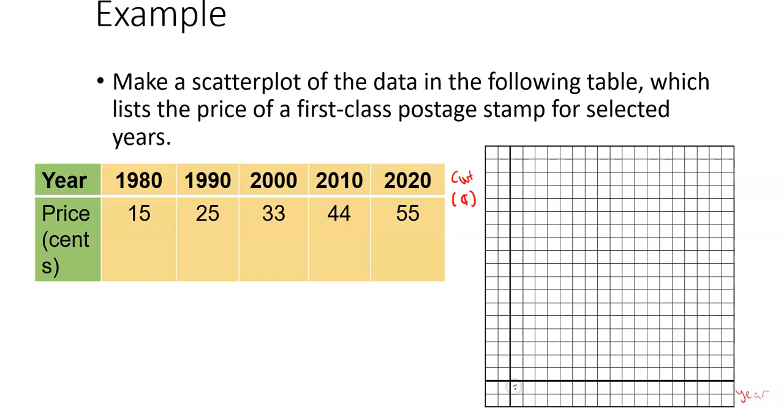I'm going to put my year on this axis and the cost on this axis, and the cost will be in cents. We're not going to jam all five years right in the corner. We'll put a little note that we're making a break, and then maybe this is 1980, this will be 1990, this will be 2000, all the way through 2020. As for the cost, maybe I'll go up by 10 cents: 10 cents, 20 cents, 30 cents, 40 cents, 50 cents, and 60 cents. I sort of get an idea of my scale based on what I'm given.